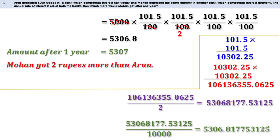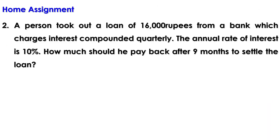Aidan gets only 5,305 rupees, so Mohan gets 2 rupees more than Aidan after one year. Now there is a homework: A person took out a loan of 16,000 rupees from a bank which charges interest compounded quarterly. The annual rate of interest is 10%. How much should he pay back after nine months to settle the loan? We will discuss the remaining part in the next video. Till then, bye.